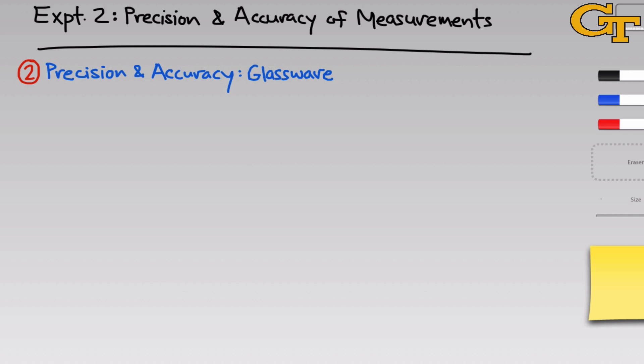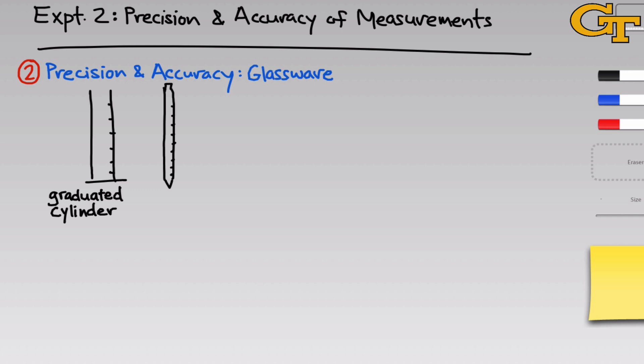The second part of this experiment will look at the precision and accuracy of different types of glassware for measuring liquids. The first type is the graduated cylinder — a long glass or plastic cylinder with markings called graduations on the side. The second is a serological pipette, a long thin tube with a nozzle at the end through which liquid can come out. It's constant width the whole way up and has graduations like the graduated cylinder, but is much thinner, which affects its precision and accuracy.